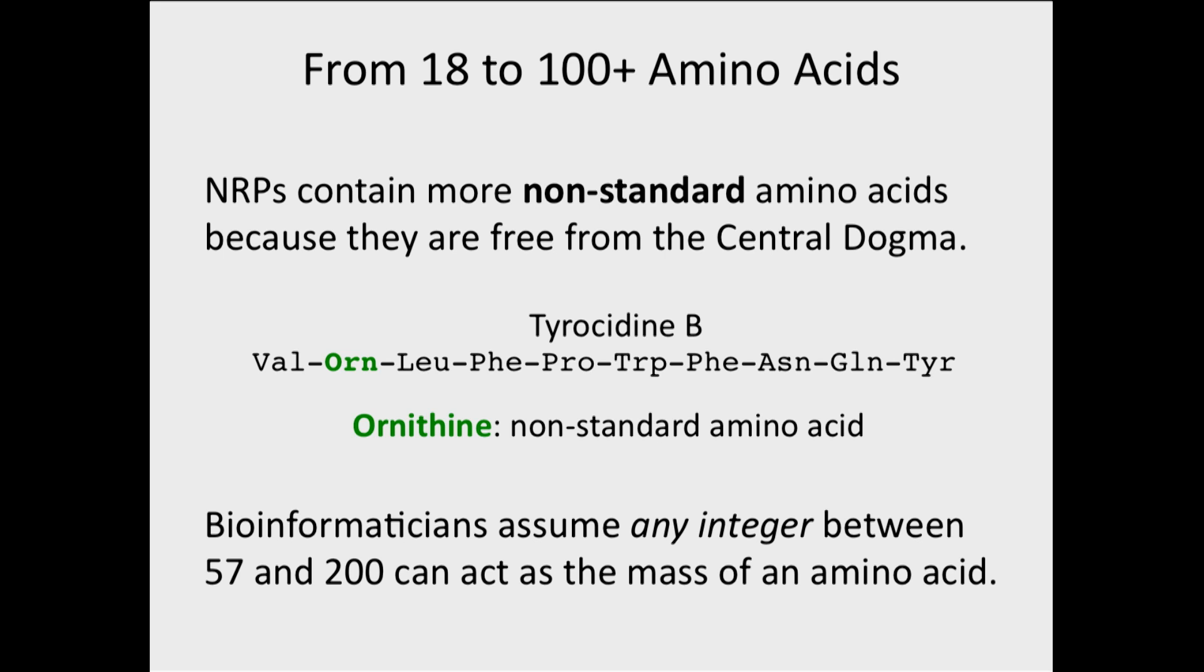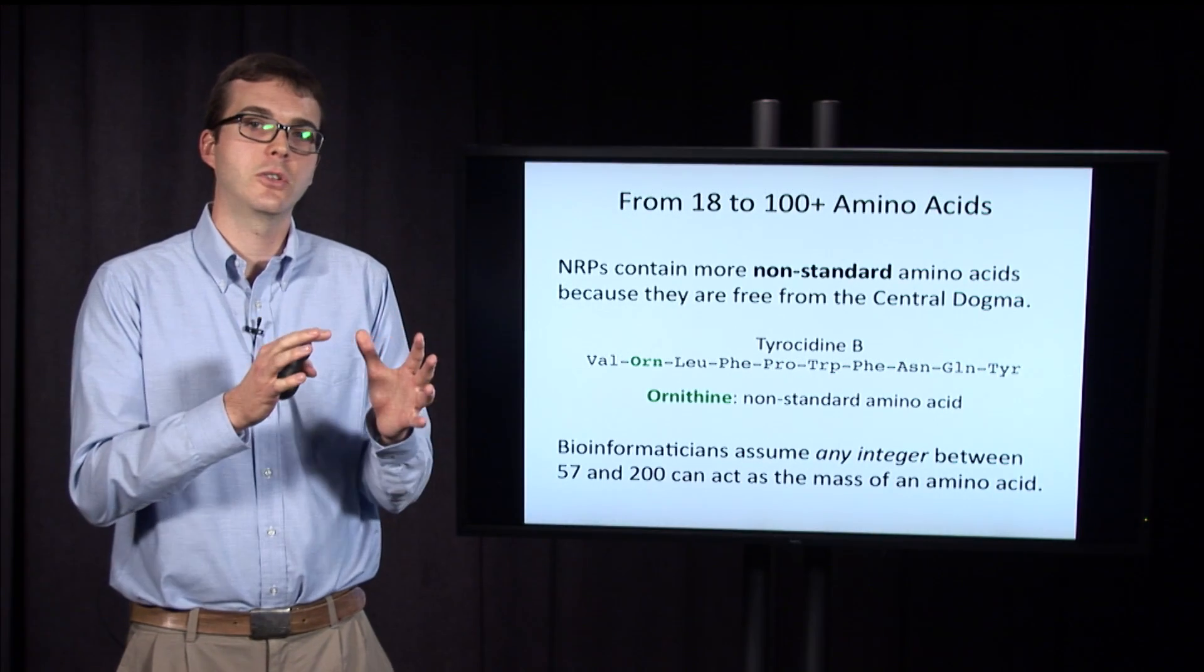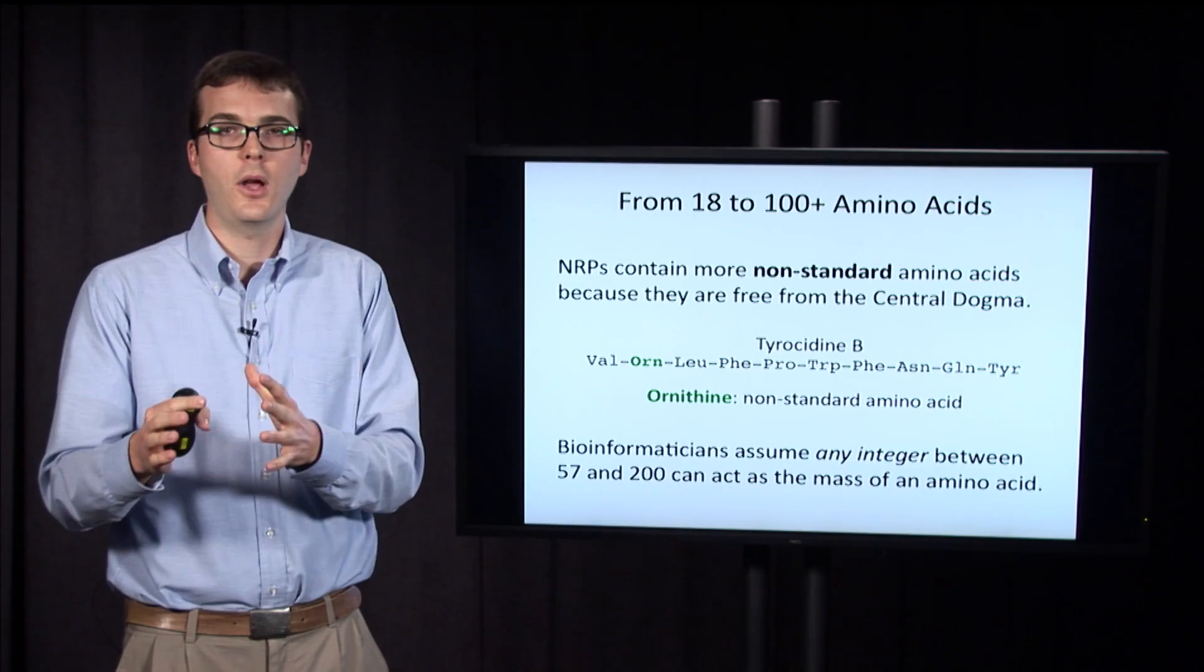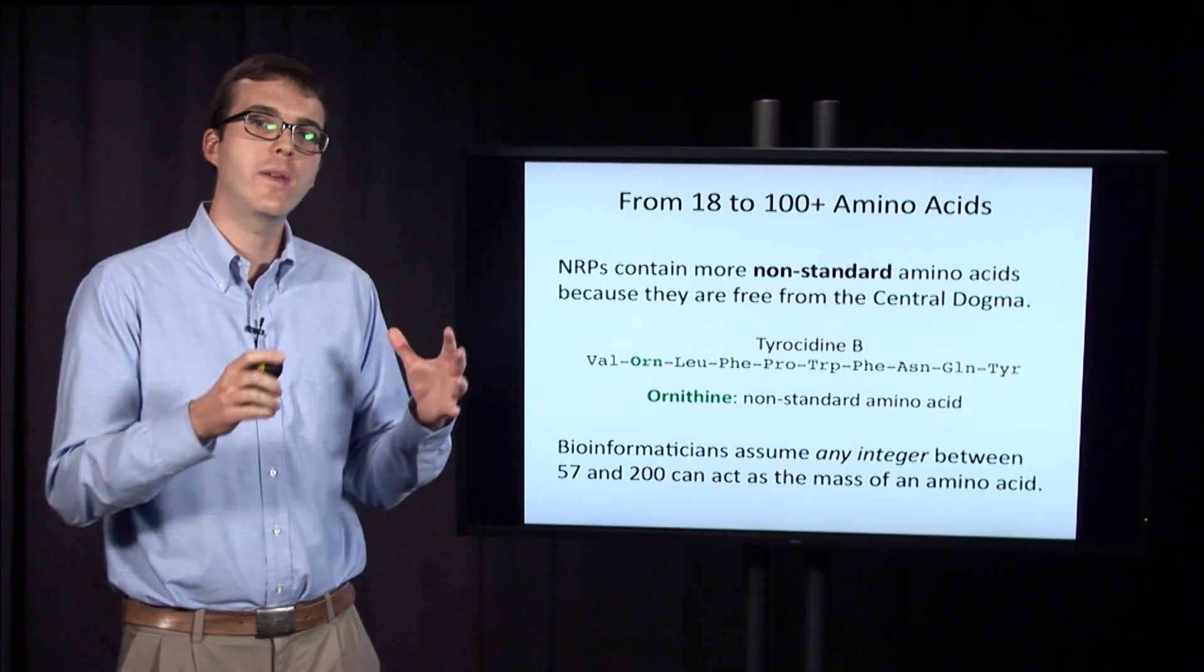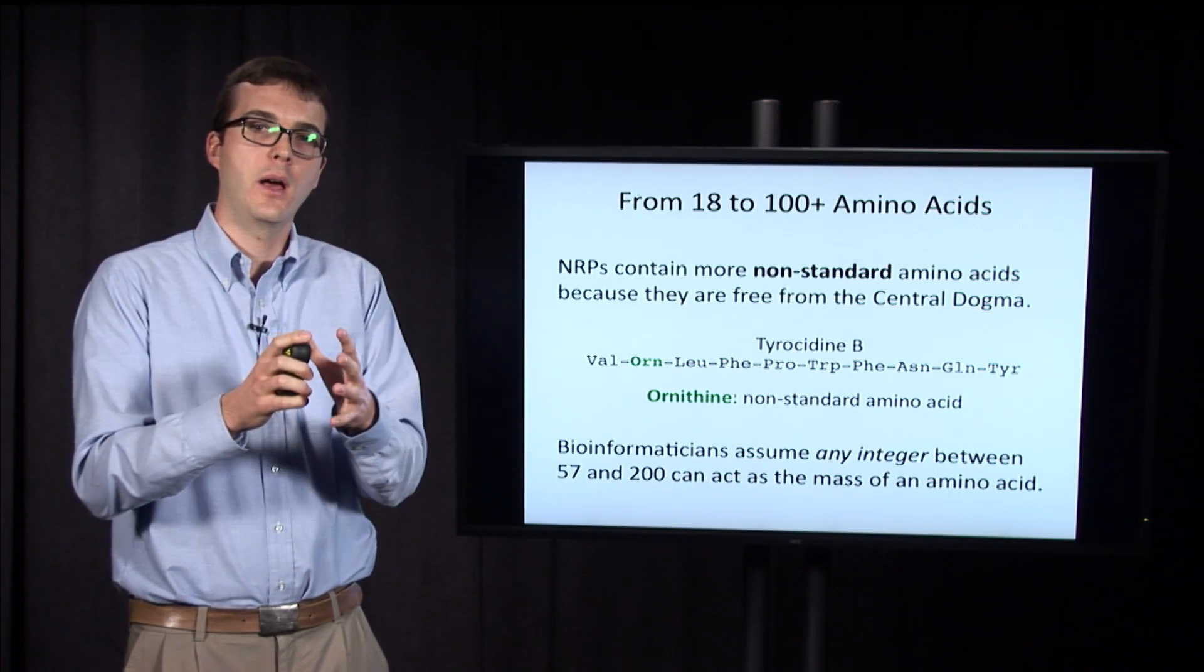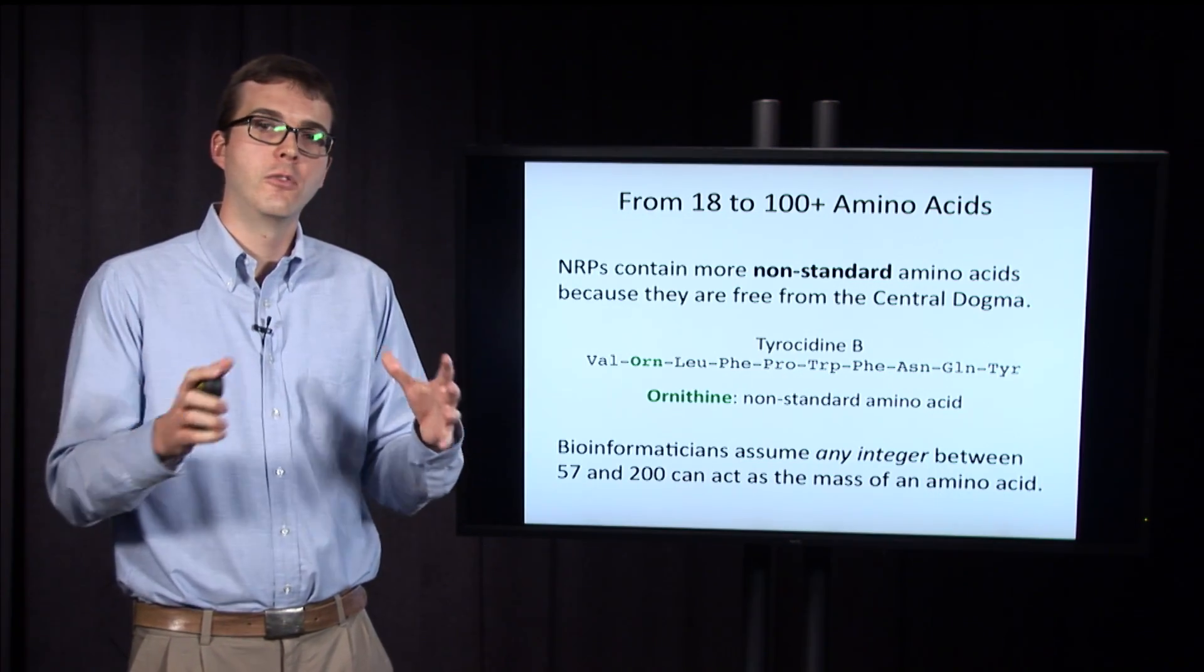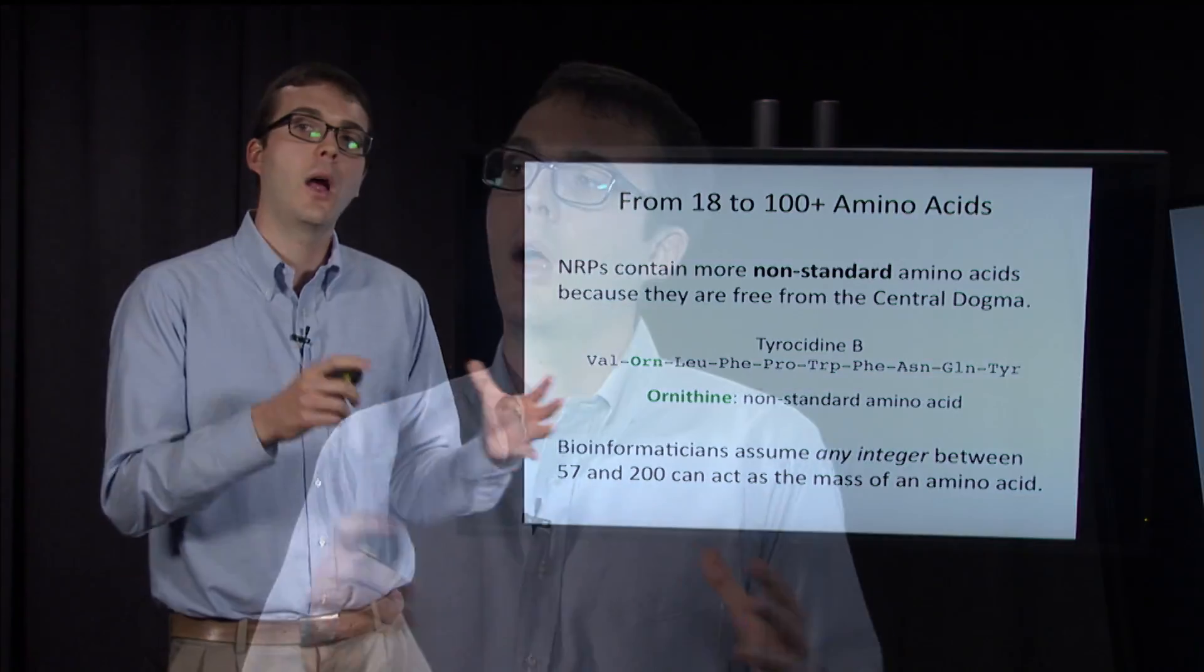To deal with these non-standard amino acids, because there are so many of them, bioinformaticians assume, and what we'll assume here, is that any integer between 57 and 200 can act as the mass of an amino acid. So we've expanded our integer mass alphabet from 18 masses to 144 amino acids by making this assumption.